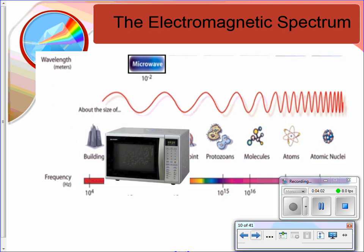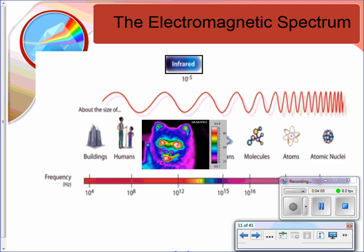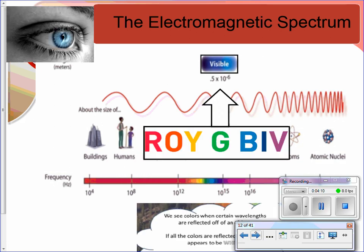Then we have microwaves with a bit of a smaller wavelength and a little bit higher frequency. Then we have infrared. Then we have visible light, and visible light follows ROYGBIV, which hopefully you learned when you were younger. Red, orange, yellow, green, blue, indigo, violet. Red is the closest to infrared and has the highest wavelength, lowest frequency. And then violet, over here on the right, is going to have a slightly higher frequency.